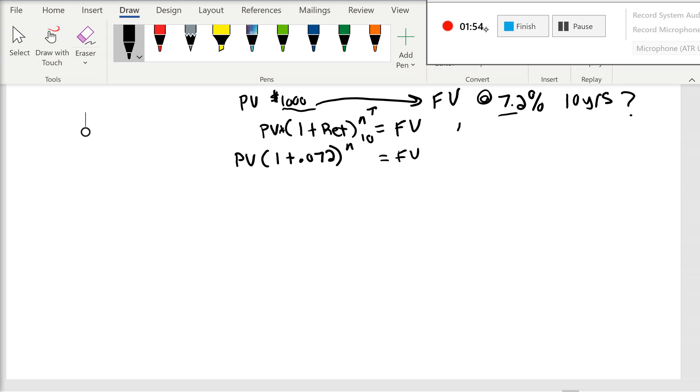Now, whenever we see this exponent sign, that's equal to your X to the Y button on your simple calculator. And so if you're looking at this, you're taking the present value times 1 plus 0.072, use the X to the Y button, and then hit 10. And that's going to give you your future value.